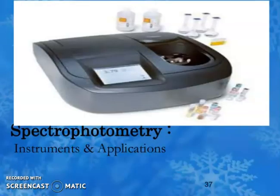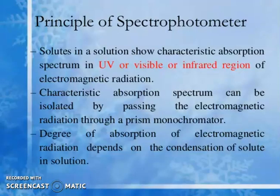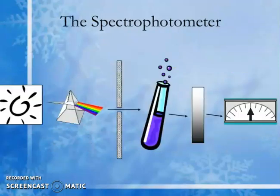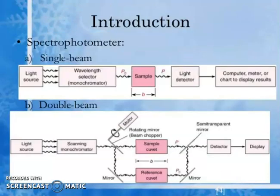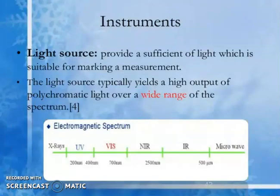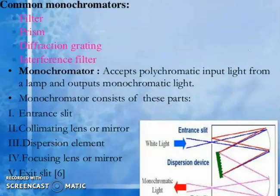Spectrophotometer — instruments and applications: the principle is that solutes in solution show a characteristic absorption spectrum in the UV, visible, or infrared regions of the electromagnetic radiation. The characteristic absorption spectrum can be isolated by passing radiation through a prism monochromator. The degree of absorption depends on the concentration of the solute. The spectrophotometer includes a display and controls, sample compartment, source, monochromator, and detector. Instrumentation types include single beam and double beam. The light source provides sufficient polychromatic light over a wide range of the spectrum.